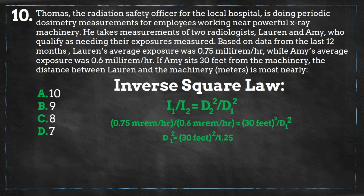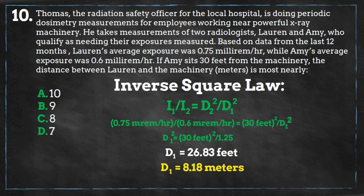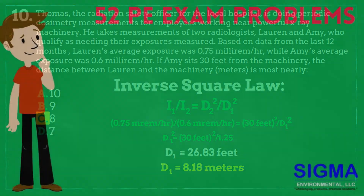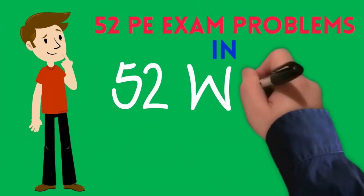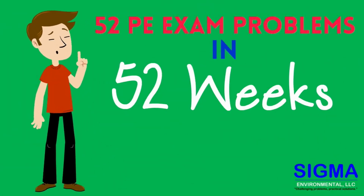We get a value of 26.83 feet. We need this value in units of meters, and realizing that there are 3.28 feet per meter, we complete this unit conversion and get an answer of 8.18 meters, which is closest to answer C. Join us for episode 11 of 52 PE exam problems every two weeks.